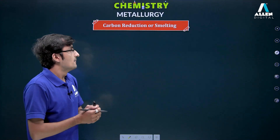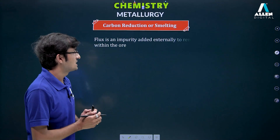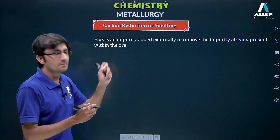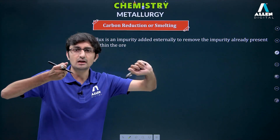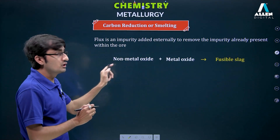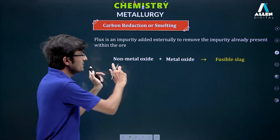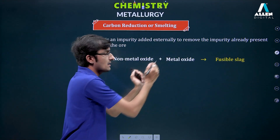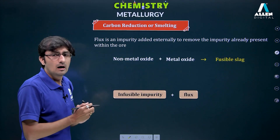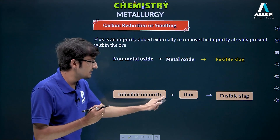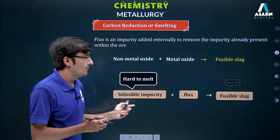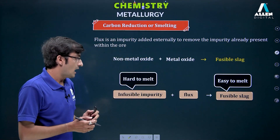Now, if we discussed the blast furnace without talking about flux in detail, the picture is incomplete. Flux is the added impurity which is externally added to remove the impurity already present within the ore — an impurity that was not separating and not melting on its own. Flux reacts with that impurity to remove it and form slag, which is in a melted (fusible) format. Reactions always occur between compounds of opposite nature. The infusible impurity combined with flux forms an easy-to-melt fusible slag.